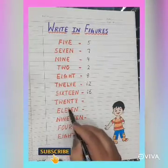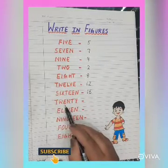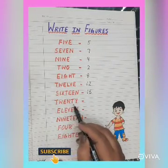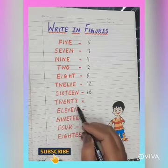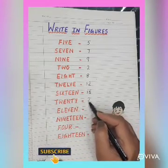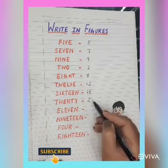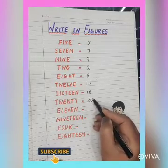Now the next number name is T, W, E, N, T, Y — 20. So we will write here 20.